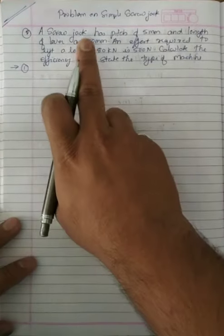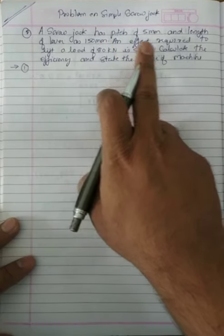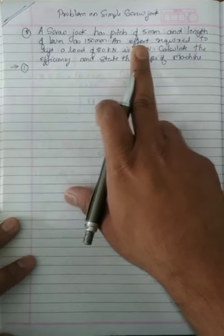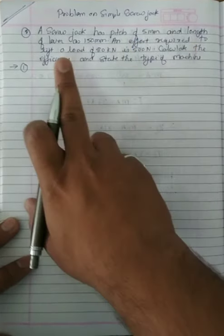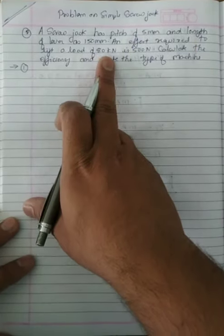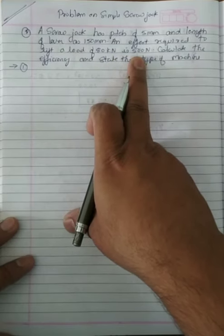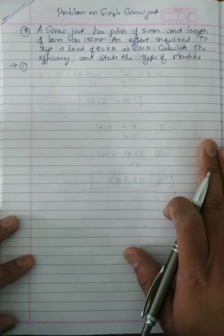Now let's see a problem. A screw jack has pitch of 5 mm and length of lever as 150 mm. An effort required to lift a load of 80 kilonewton is 500 newton. Calculate the efficiency and state the type of machine.